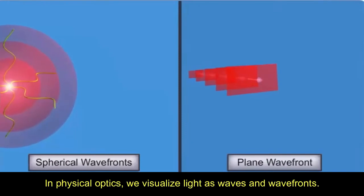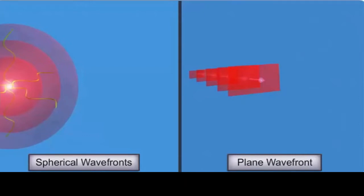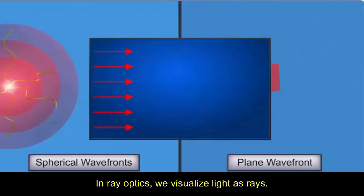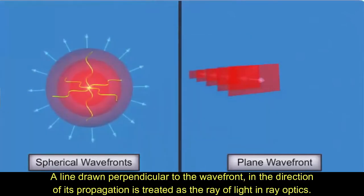In physical optics, we visualize light as waves and wavefronts. In ray optics, we visualize light as rays. A line drawn perpendicular to the wavefront in the direction of its propagation is treated as the ray of light in ray optics.